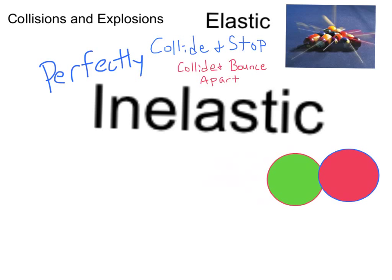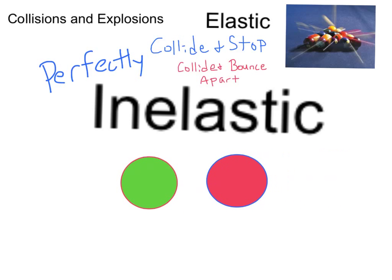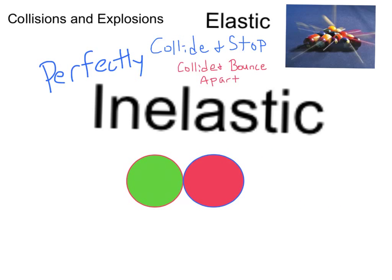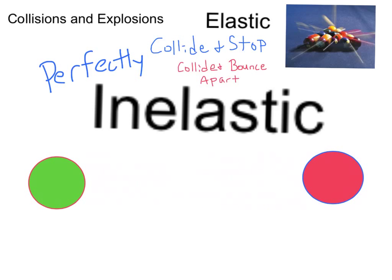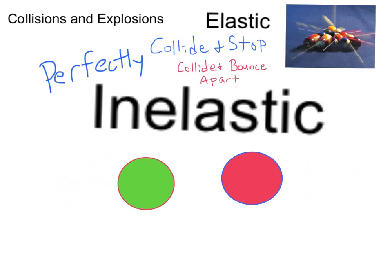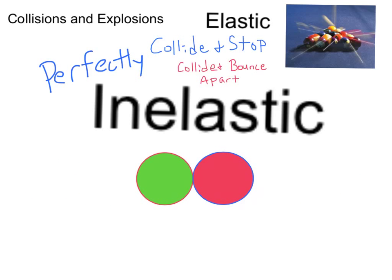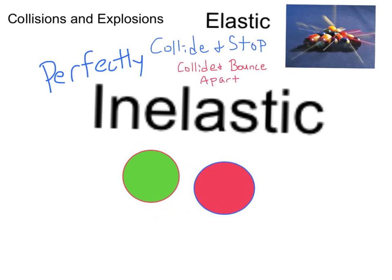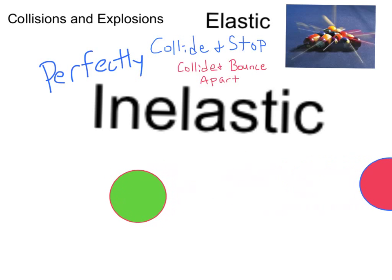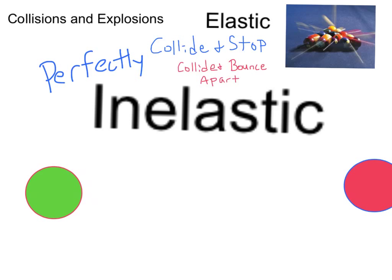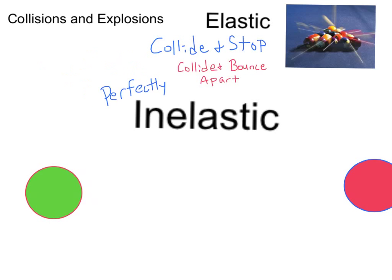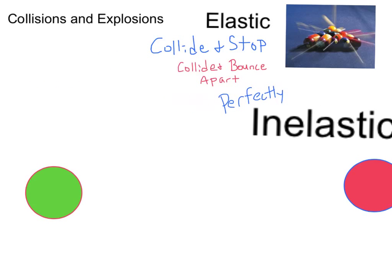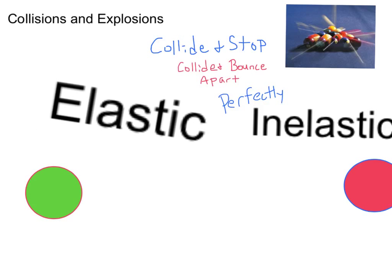We're going to look at three examples: an explosion, a perfectly inelastic collision involving train cars, and an elastic collision involving billiard balls. Explosions occur when objects initially together are forced apart by some force between them. If the two masses are equal, they move away at the same velocity. If one mass is greater, say the green mass is greater than the red mass, then the red mass moves away with a higher velocity than the green one.